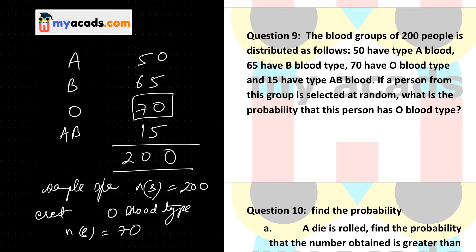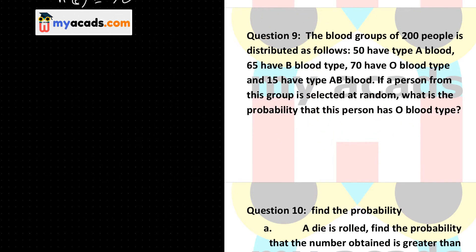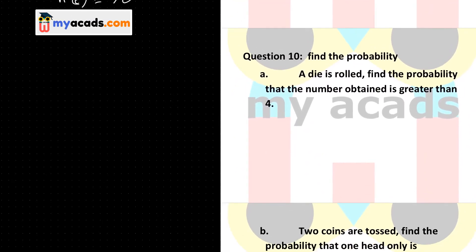My probability is NE by NS. NE is 70 and NS is 200, so the probability is 70 divided by 200, which simplifies to 7 by 20.